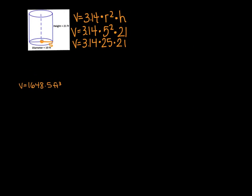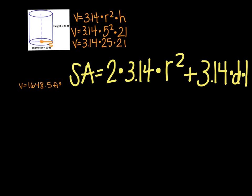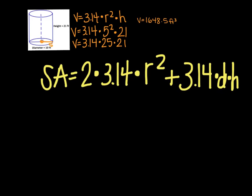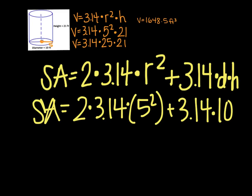Now we need to do the same thing for surface area. The surface area formula is a little longer: 2 times 3.14 times r squared, plus 3.14 times diameter times height. Using what we know: 2 times 3.14 times 5 squared, plus 3.14 times 10 times 21. I'm going to chunk it because this gets a little messy. Let me rewrite it with 5 squared as 25.